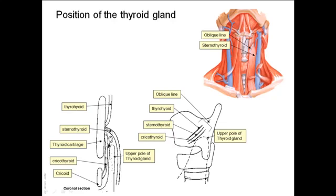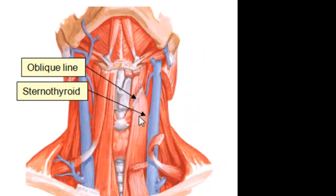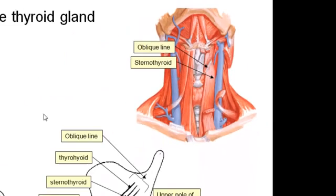The oblique line of the thyroid cartilage provides attachment for the cricothyroid muscle, the sternothyroid, and in continuity with the sternothyroid, the thyrohyoid muscle. All of these muscles are attached to the oblique line of the thyroid cartilage.